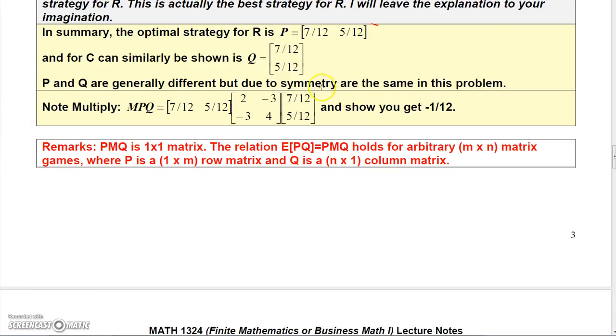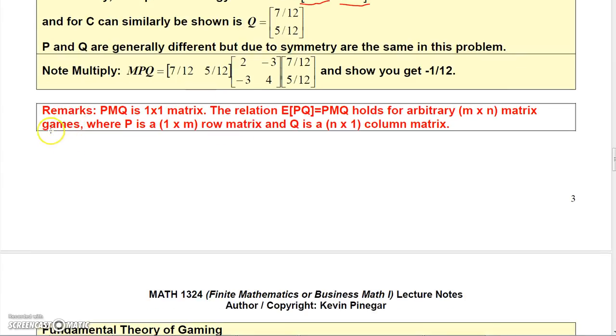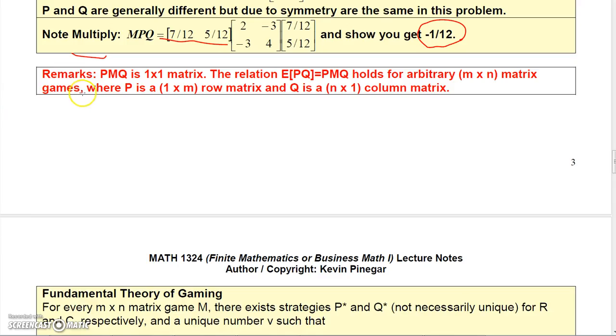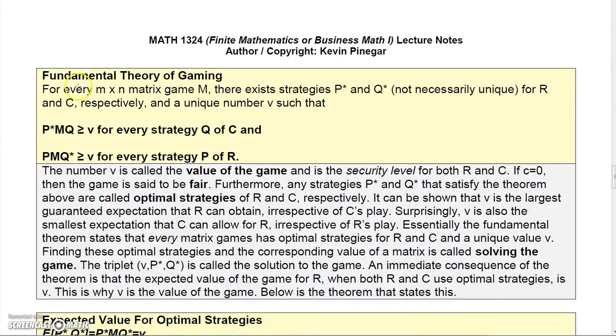So in summary, the optimal strategy for R is choosing row 1, 7 twelfths of the time, and row 2, 5 twelfths of the time. And for C, it can also be shown the same for C, 7 twelfths and 5 twelfths. Now P and Q are generally different, but due to symmetry in this problem, they're the same. So if you multiply M times P times Q in this example, if you use these probabilities for R and these probabilities for Q and you multiply them together, you'll find that the expected value is for R to lose approximately negative 1 twelfth of a dollar or negative 8.3 cents. So that's the answer for the best strategy.